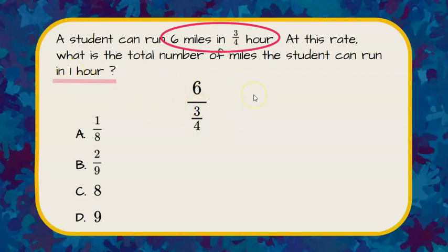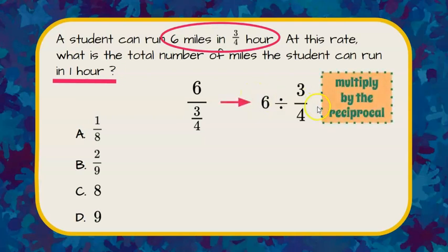We want to know one hour, so we are going to rewrite this to be a division problem. Six divided by three-fourths. And when we divide by a fraction, we're going to multiply by the reciprocal.